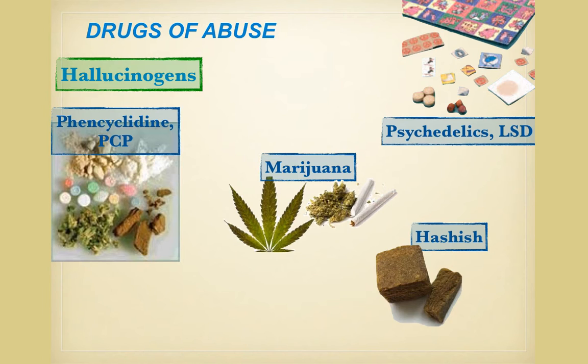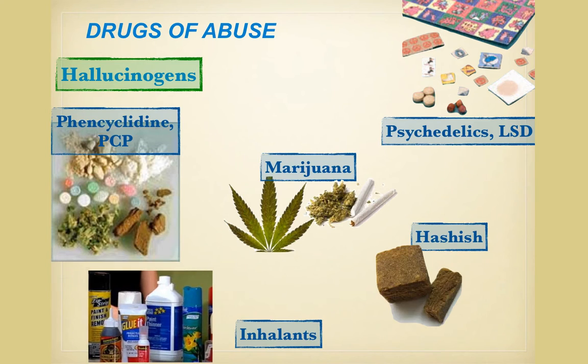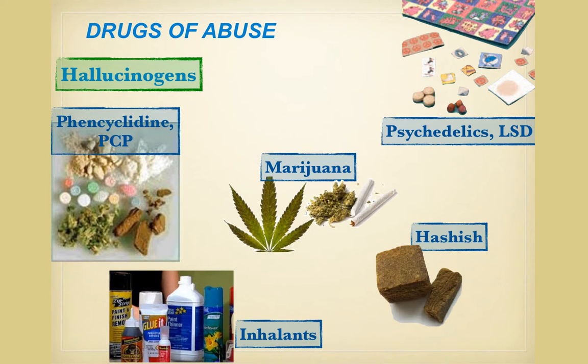Inhalants include many substances that produce fumes — adhesives, aerosols, cleaning fluids, fuels, and many others. These are inhaled and can induce feelings of intoxication and euphoria through their actions on the GABA systems. The psychological and physical effects of inhalant drugs can be very serious and even fatal with just one use.